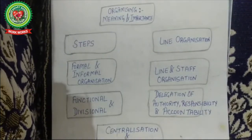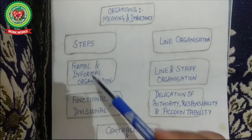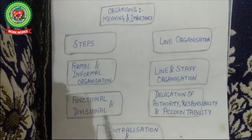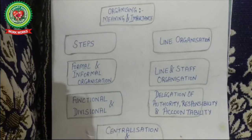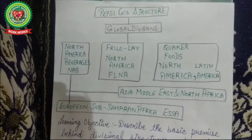As per your mind map, the concepts you have to cover in this chapter include: meaning, importance, steps, line organization, formal and informal organization, line and staff organization, and functional organization. Today we are going to cover divisional structural organization, and then we are left with just two topics — delegation and centralization.